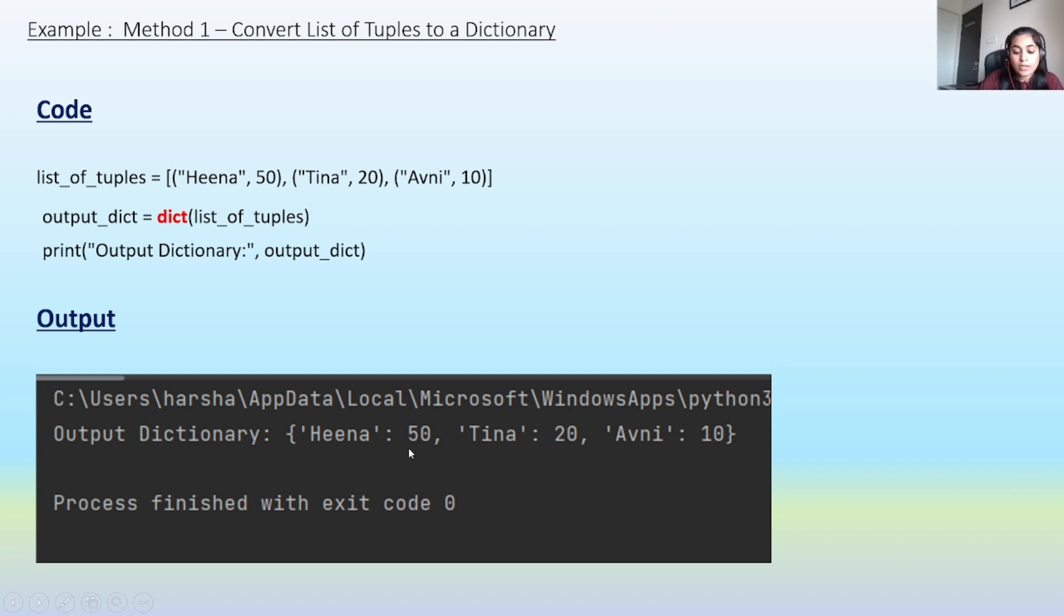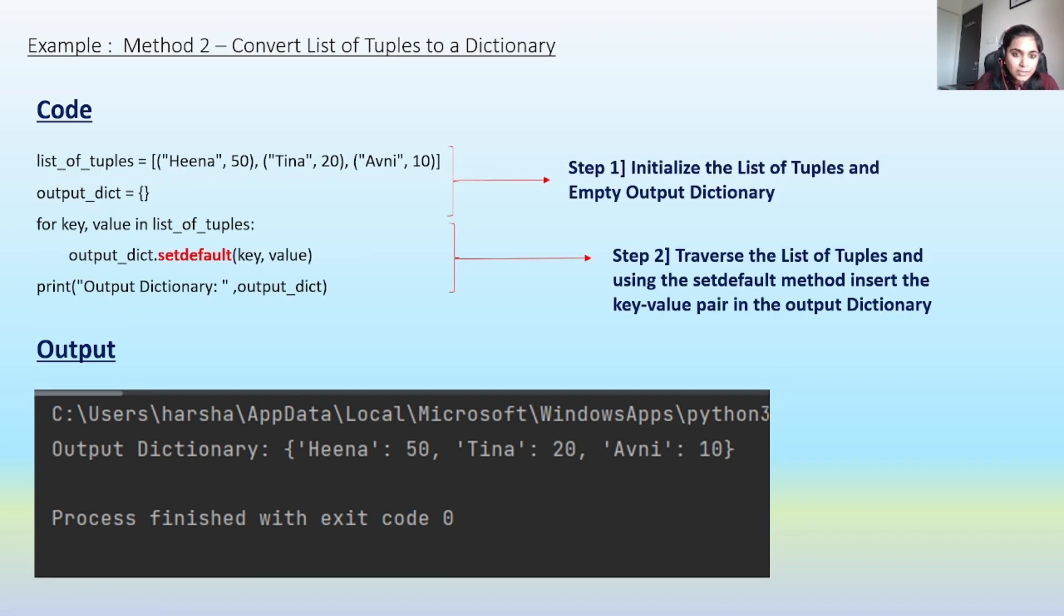Now there is another method. This is Method 2. In this also, first step we have initialized the list of tuples, then we have initialized an empty output dictionary. Now we are traversing this list of tuples.